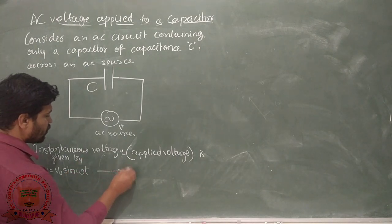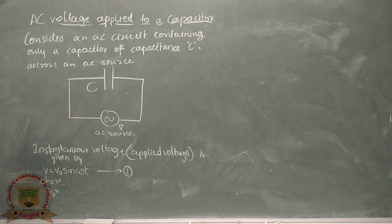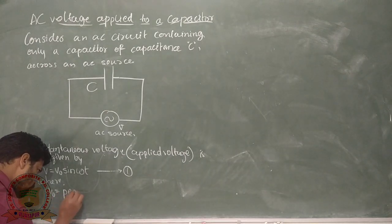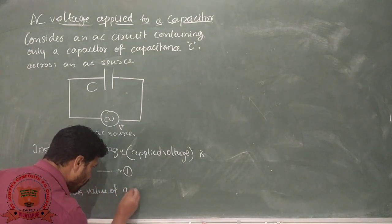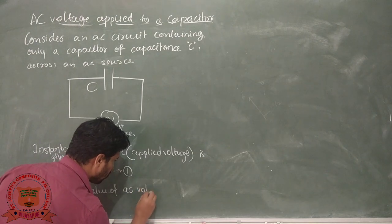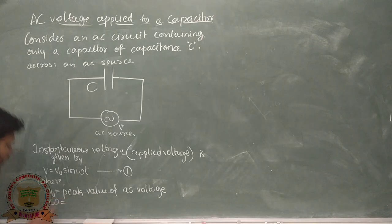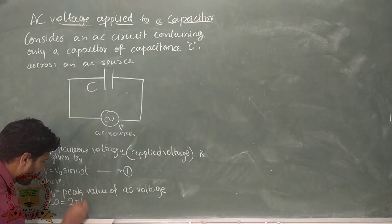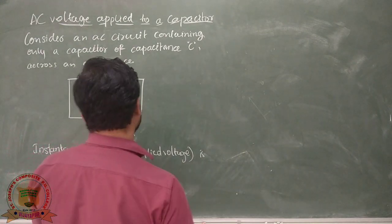Let us call that equation number 1. In this equation, V₀ is the peak value of the alternating voltage, and ω is the angular frequency, given by 2π times the frequency of this AC source.